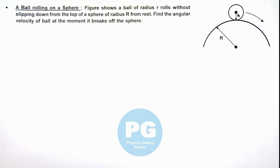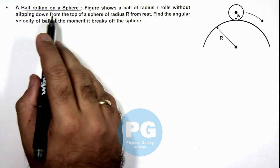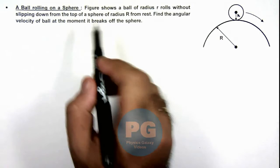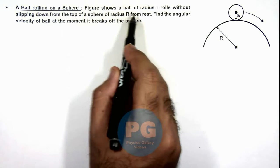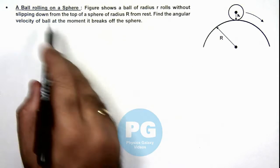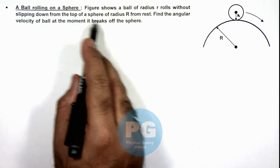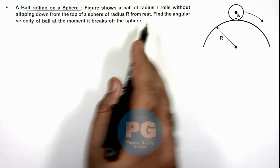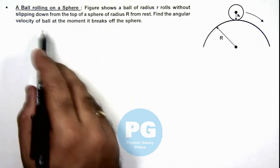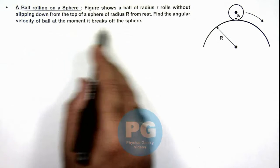In this illustration we'll discuss a ball rolling on a sphere. Here we are given that the figure shows a ball of radius r that rolls without slipping down from the top of a sphere of radius R from rest.